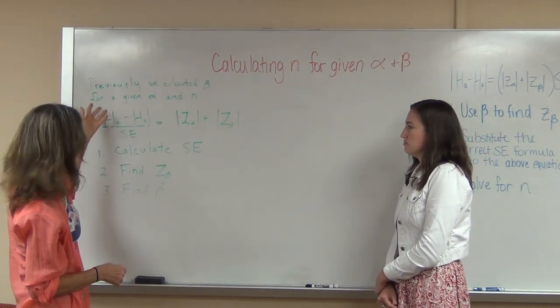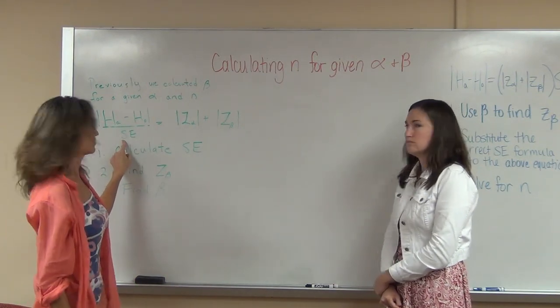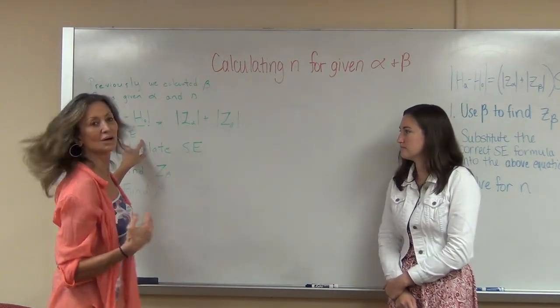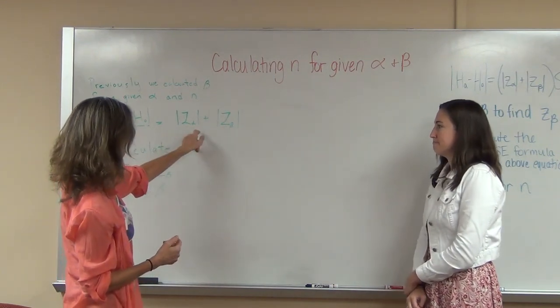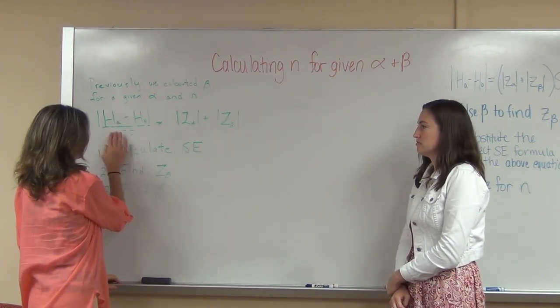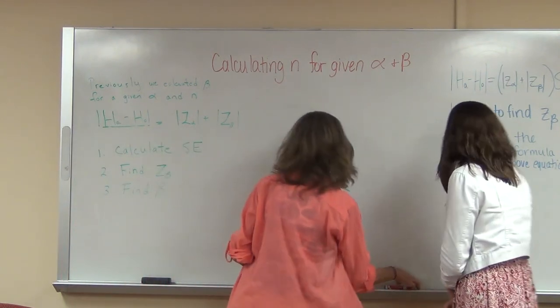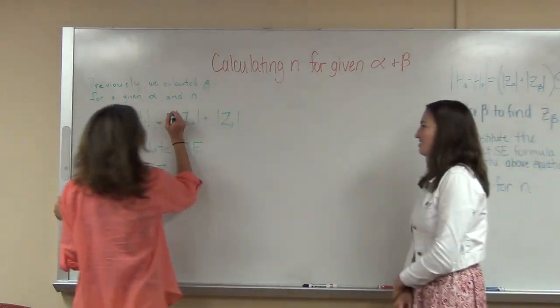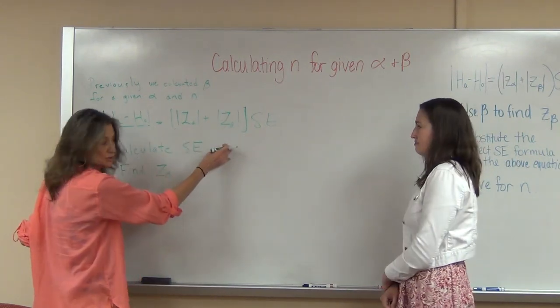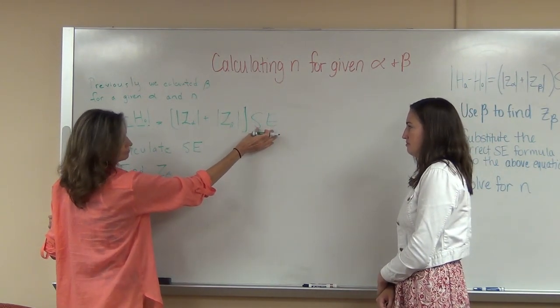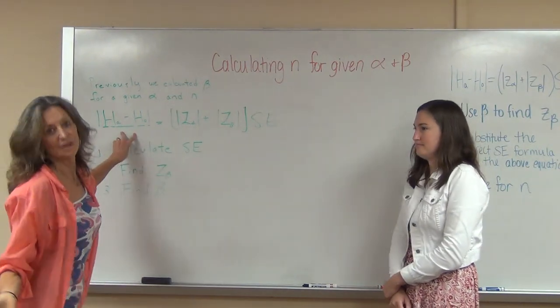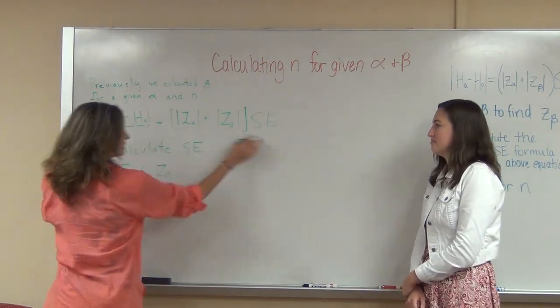We said the usual thing: this distance divided by the standard error equals a z-score, a z-distance. But for that example, it worked out because under both the null and the alternative, they had the same standard deviation. But in general, the better way to do this is to write it like this, because sometimes you could have different standard errors for the two distributions.